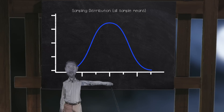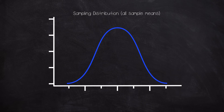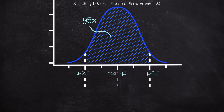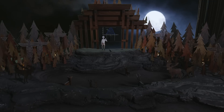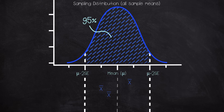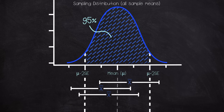Rules of thumb are helpful things. You should remember that we have one rule of thumb that tells us that under certain conditions, about 95% of all the sample means we could end up with will be less than two standard errors away from the true mean. And if a sample mean is usually less than two standard errors away from the true mean, then the true mean is usually less than two standard errors away from the sample mean. In other words, if we reach out about two standard errors from a sample mean, we will usually capture the population mean in this interval.